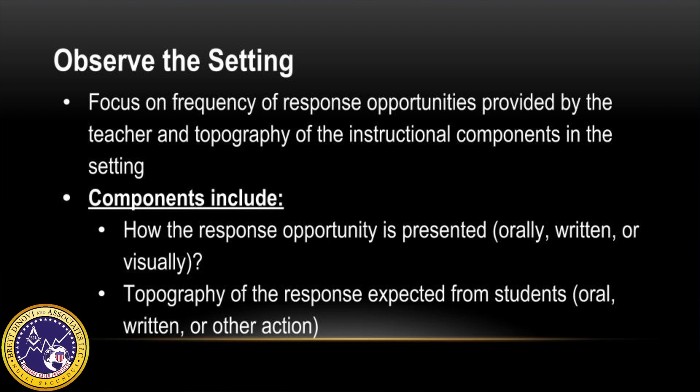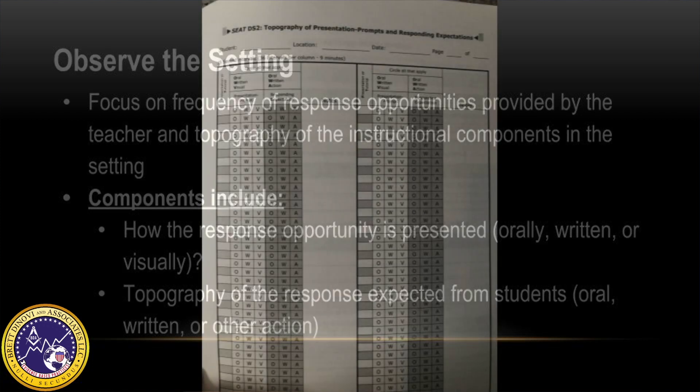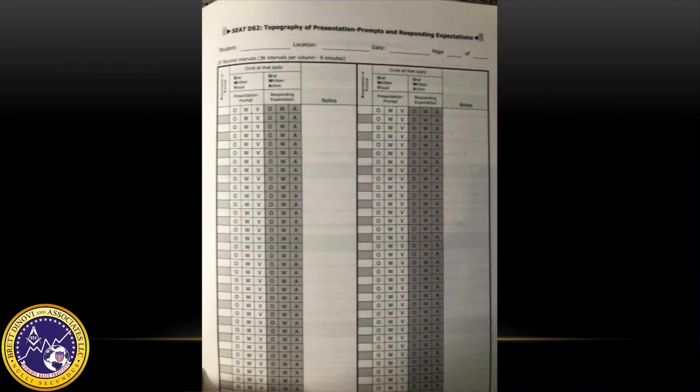The components include how the response opportunity is presented — whether it be orally, written, or visually — and the topography of the response expected from students, whether that be oral, written, or another action. Analysis of this data can show what responses are required in the setting and how often response opportunities are provided to students. Based on this information, the student with which the FBA is being conducted may or may not have the skills required for response expectations. If they do not, interventions can be developed to improve upon those skills.